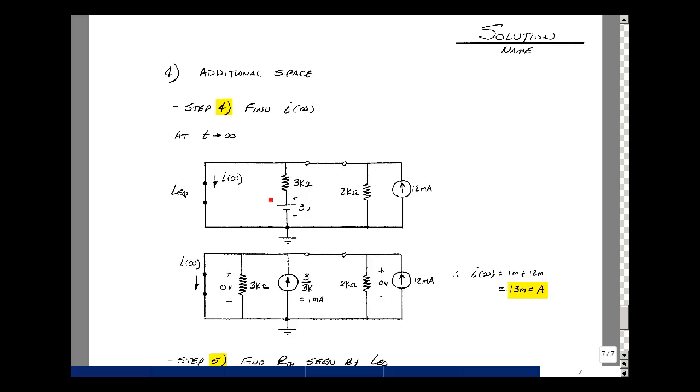A lot of ways you could do this. I did a source transformation here to put everything in parallel. So I've got a 3k in parallel with a current source whose value is 3 volts divided by 3k, or 1 milliamp. So with the short circuit here we're forcing 0 volts across the resistors. So all of this current and this current has to flow into here, because with 0 volts here there's 0 current. So the current in the inductor is the sum of these two, 1 milliamp plus the 12 milliamps, so 13 milliamps.